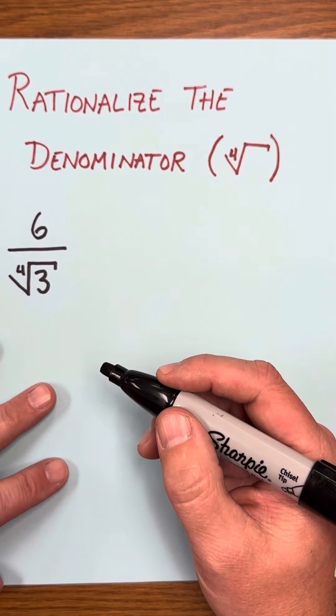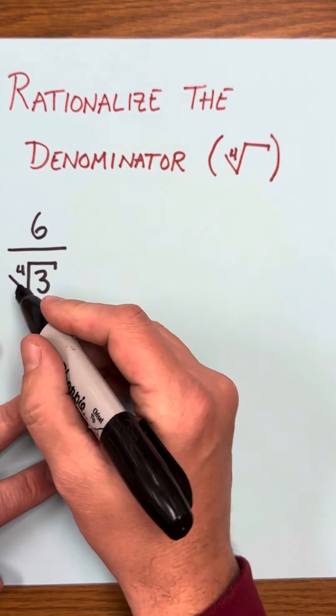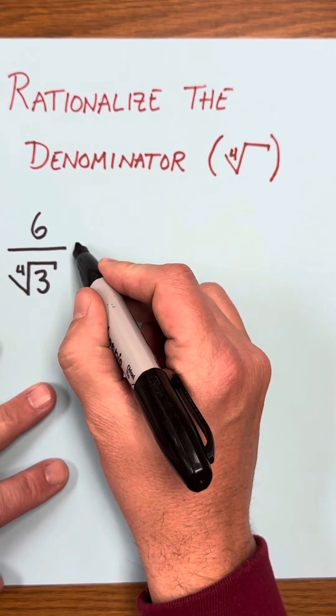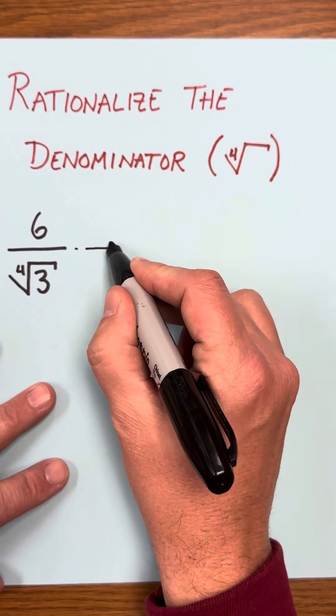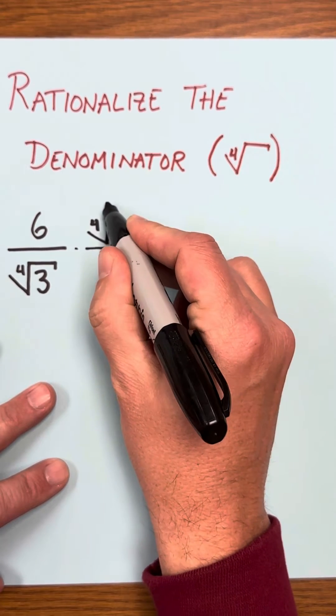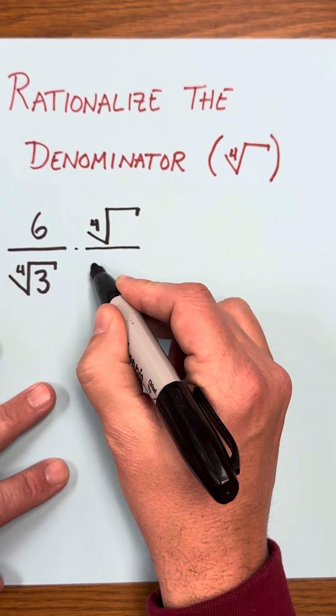Okay, let's rationalize the denominator of a fraction that involves a fourth root radical. We're going to multiply top and bottom by a fourth root.